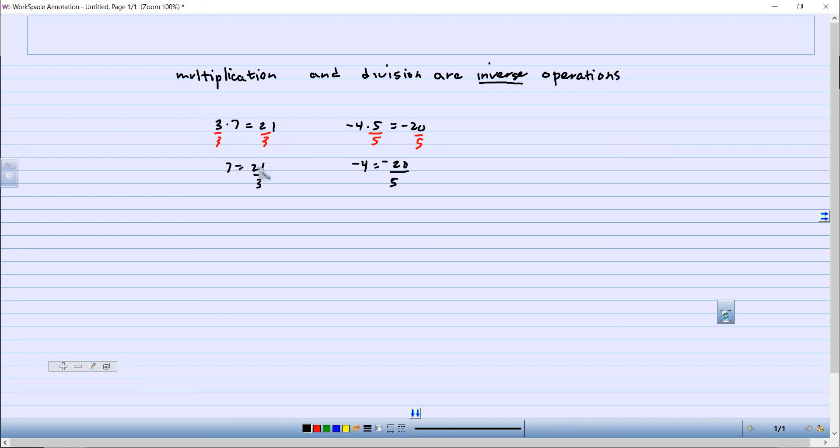3 times 7 is 21, so 21 divided by 3 is 7. Negative 4 times 5 is negative 20, so negative 20 divided by 5 is negative 4. Now why did I show you that? Because I want to make the connection between the rules for the signs of a multiplication problem and the rules of the signs for a division problem to show you how this all works.